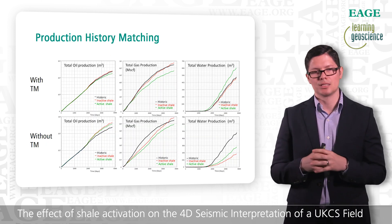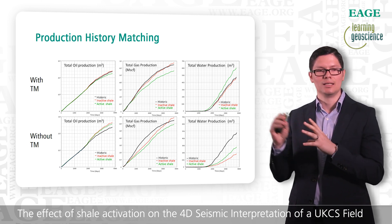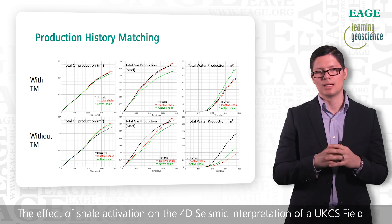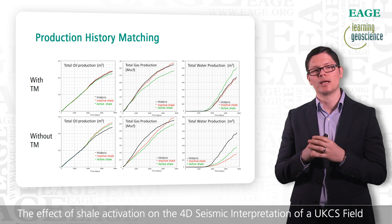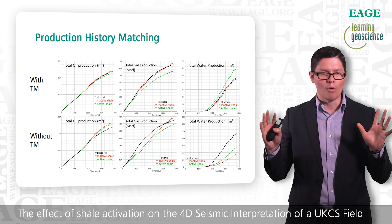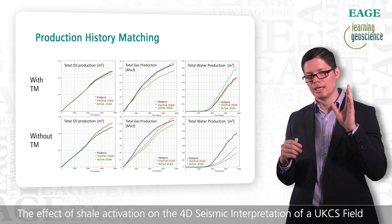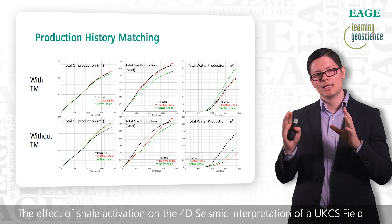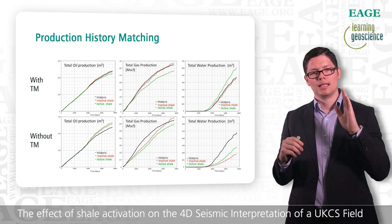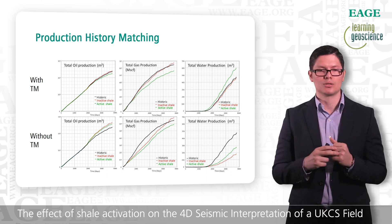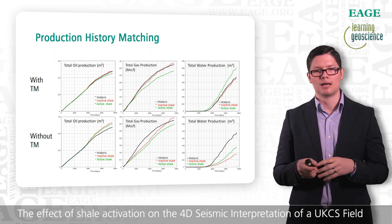Looking at the production history matching, we can see the results with transmissivity multipliers clearly conditioning how the data matches the historical record, shown with a black line in the plots. Once the transmissivity multipliers are removed, we can see that they were modeled to force the model to converge to the historic production data. Without transmissivity multipliers, the active shale model matches much better the historic data for water production and hydrocarbon production, though this is not the case for gas — the gas volumes are better matched by the inactive shale model.